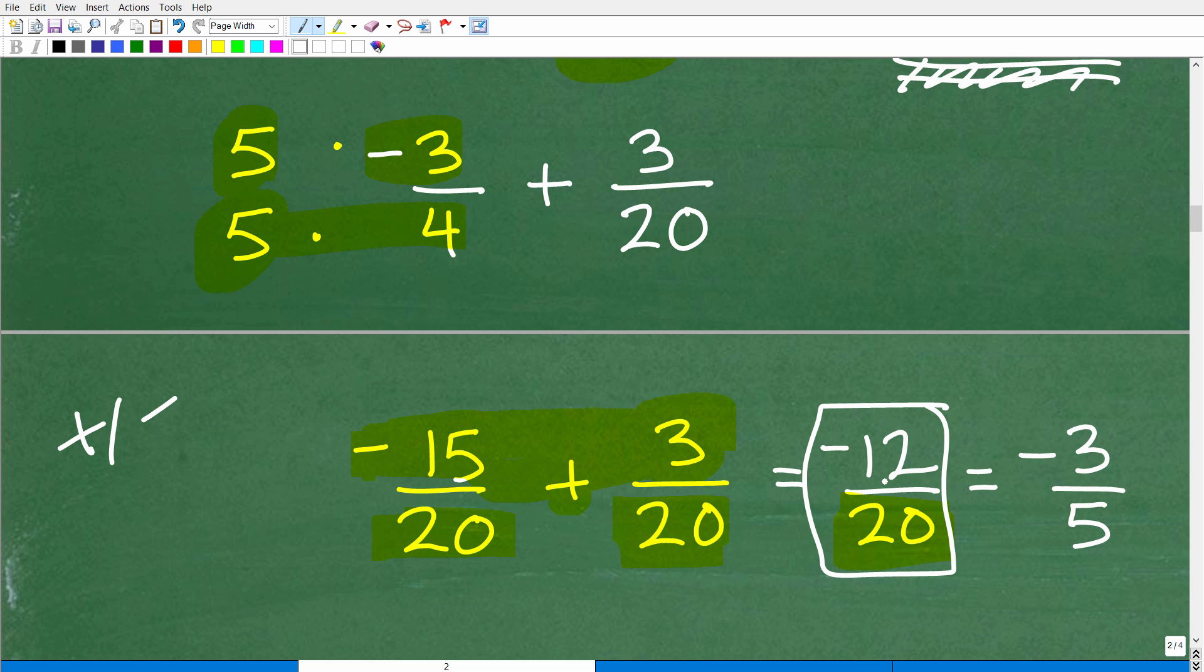Now we have the same denominator. So how do we add fractions with the same denominators? We simply just add the numerator. So that's negative 15 plus three. That's negative 12. So now we have negative 12 over 20. So we're pretty much done. But would you leave your answer like this? No. You always want to simplify and reduce your final answer. So that would be negative 12 over 20. We could reduce down to negative three-fifths. So this is your final answer.